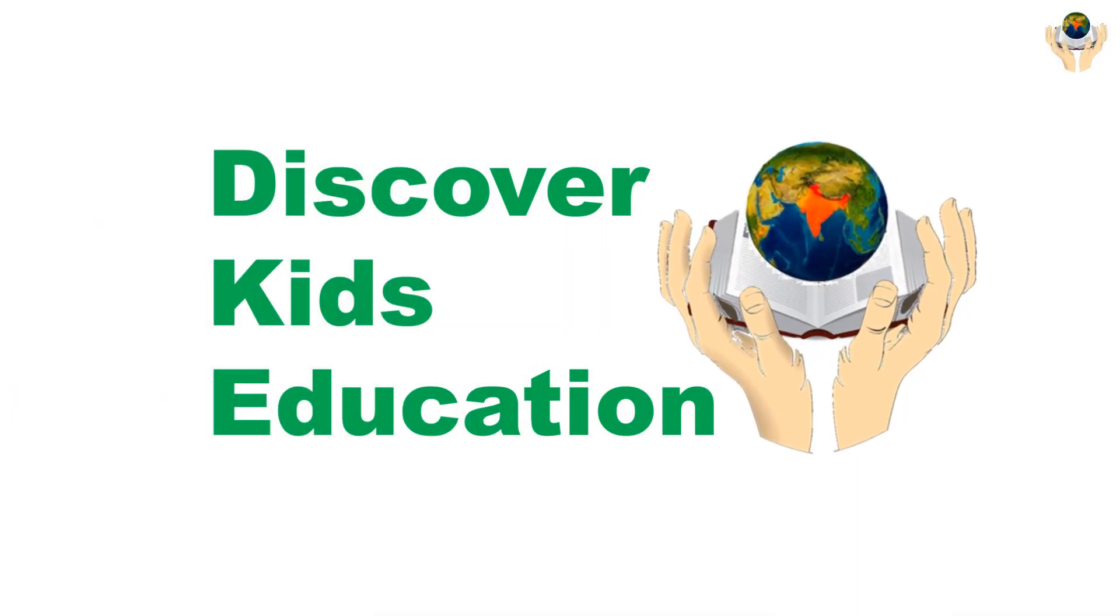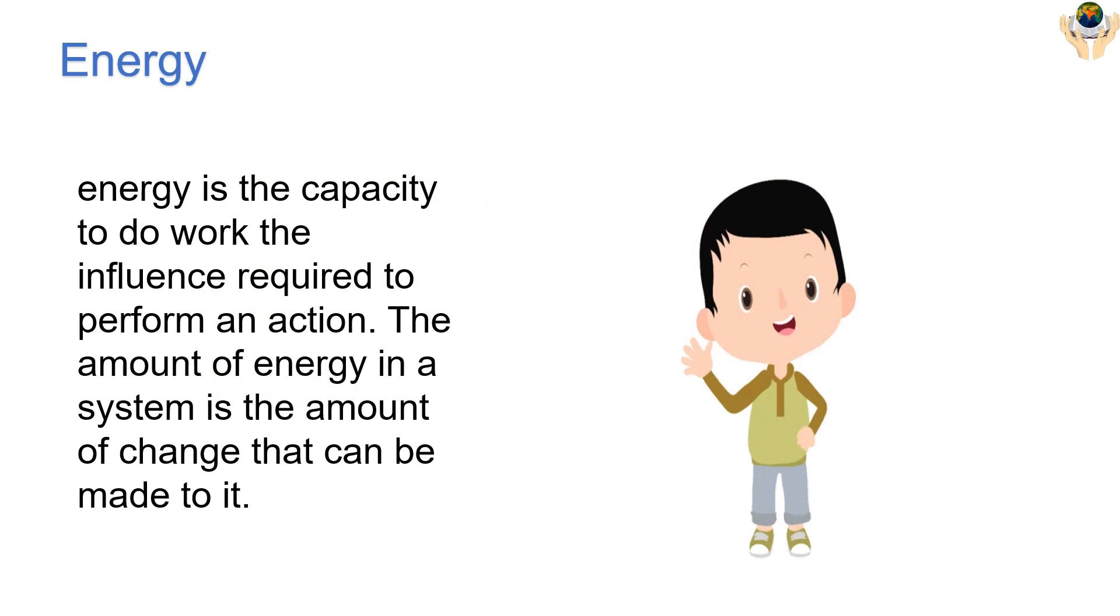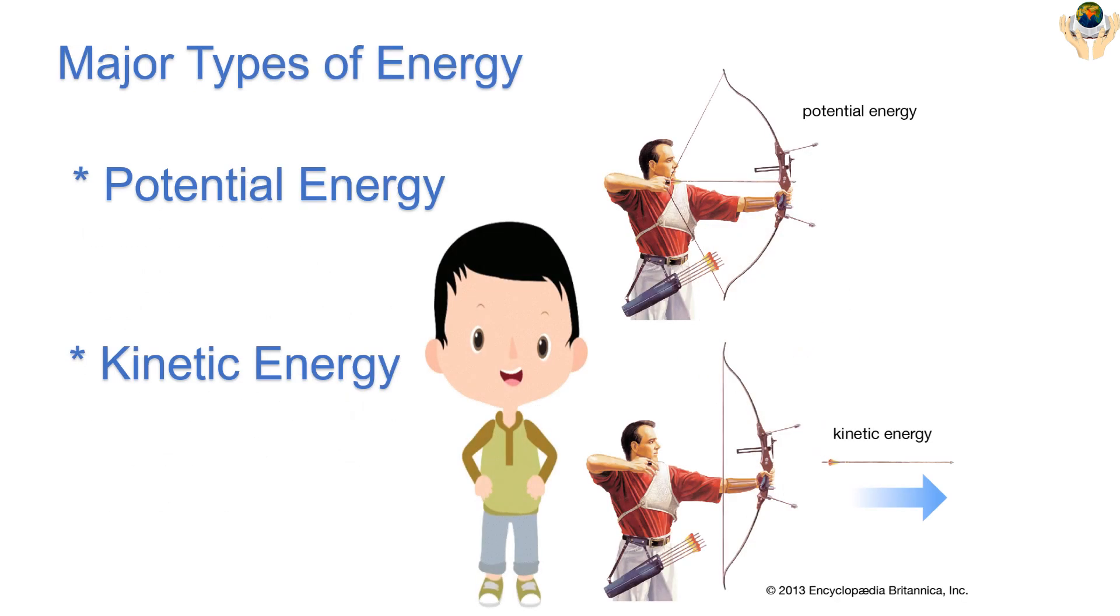Hello everyone, welcome to Discover Kids Education. Today we are going to learn about energy. What is energy? Energy is the capacity to do work, the influence required to perform an action. The amount of energy in a system is the amount of change that can be made to it. There are two major types of energy: potential energy and kinetic energy.